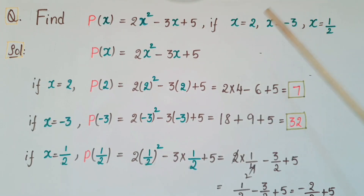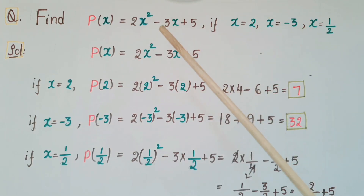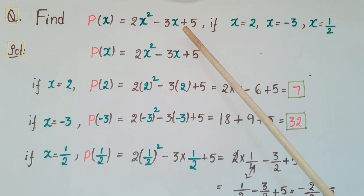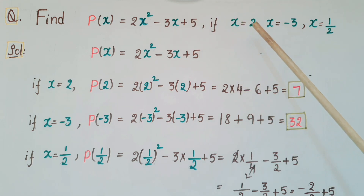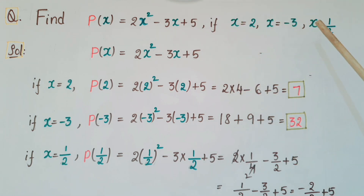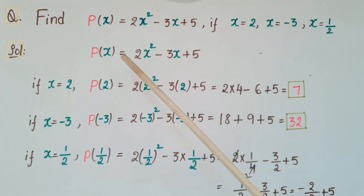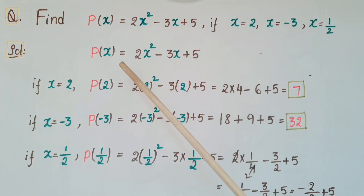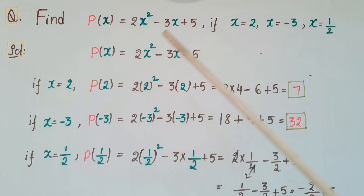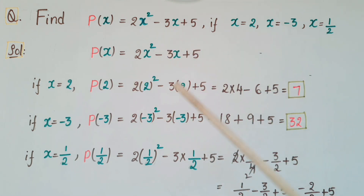Now see this question: find the values of p(x) = 2x² - 3x + 5. If x is equal to 2, x is equal to -3, and x is equal to 1/2. So here we have to replace each x value in this polynomial and find the value of the polynomial for that x value.